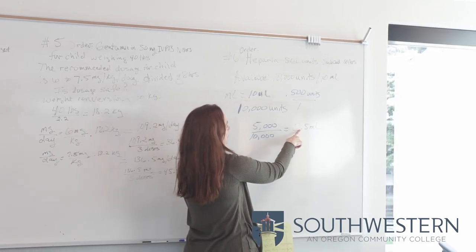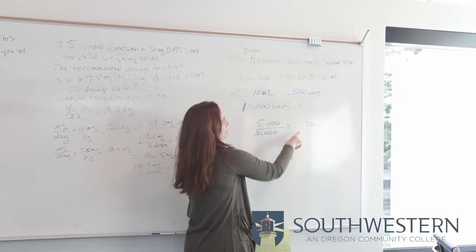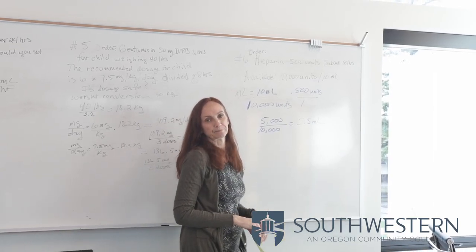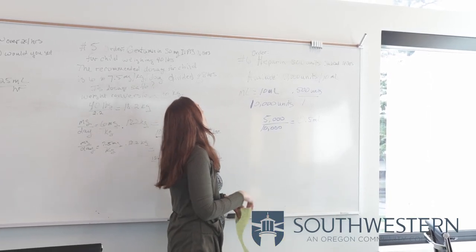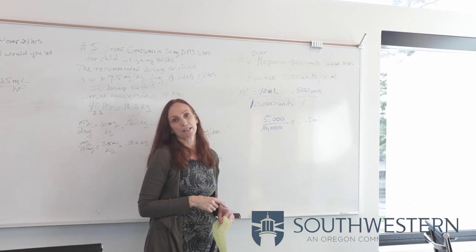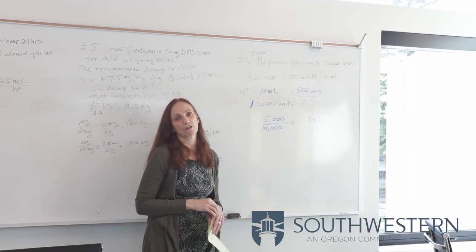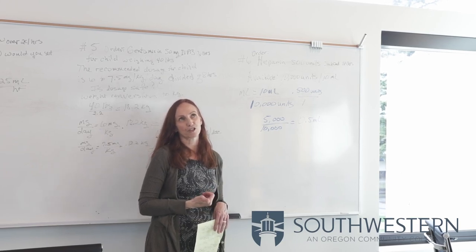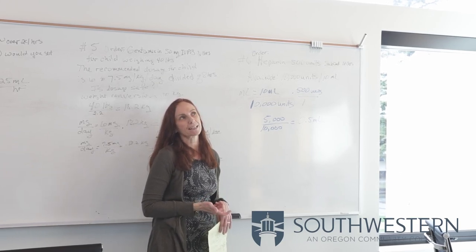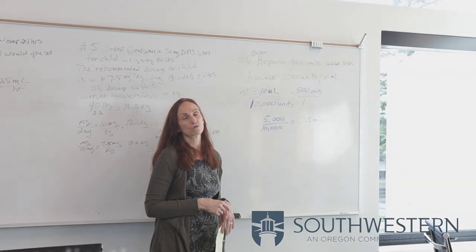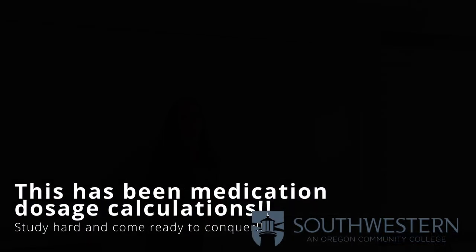Divide 10,000 into 5,000 and you get 0.5 milliliters — half a milliliter. These are each of the different medication calculations you will see on your med calculation tests in Nursing 111 and Nursing 221.